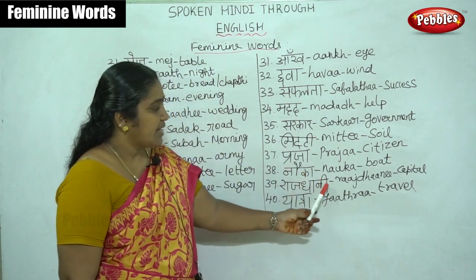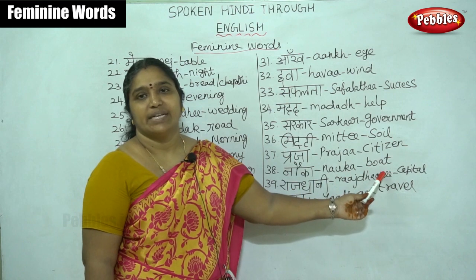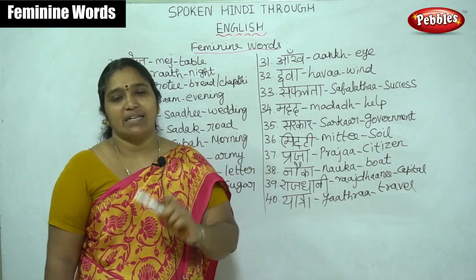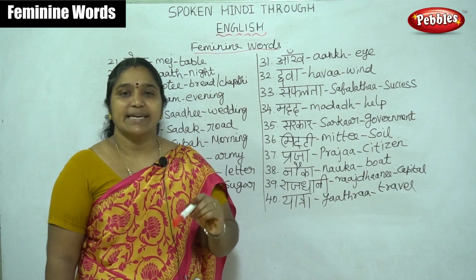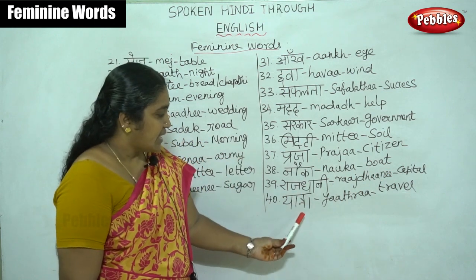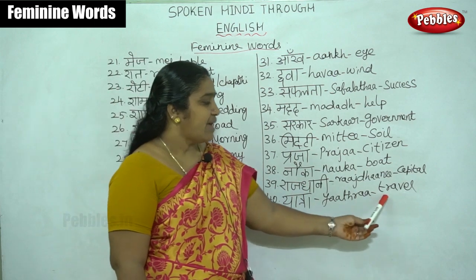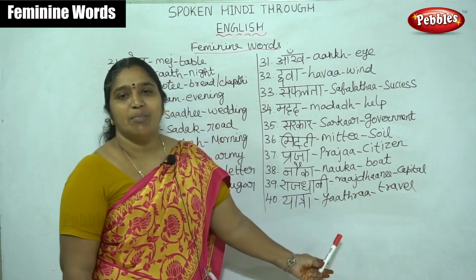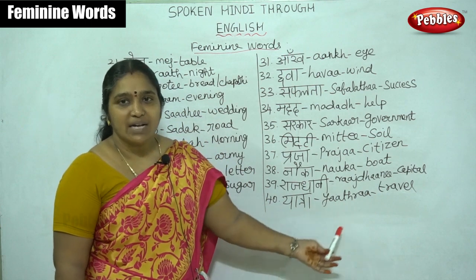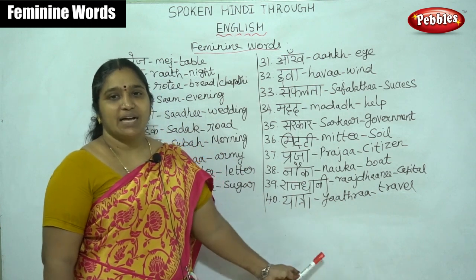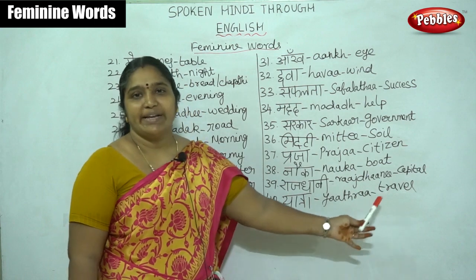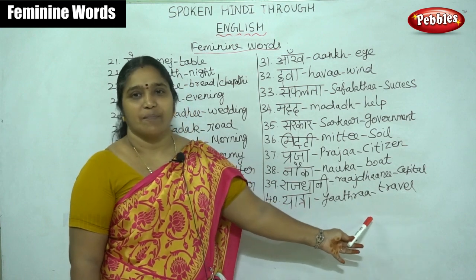Then 'rajdhani'. Rajdhani means capital. Dilli bharat ki rajdhani hai — Delhi is the capital of India. Then 'yatra'. Yatra means travel or journey. Ham Mumbai ki ya Kashi ki yatra ja rahe hain — we are going on a journey to Mumbai or Kashi.